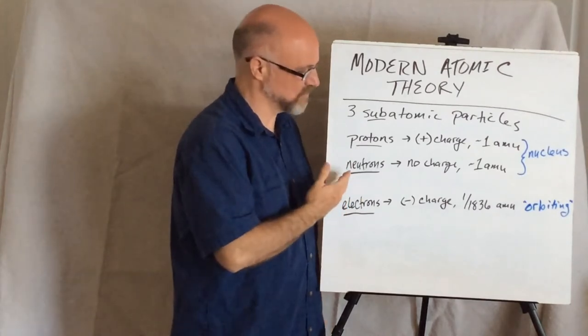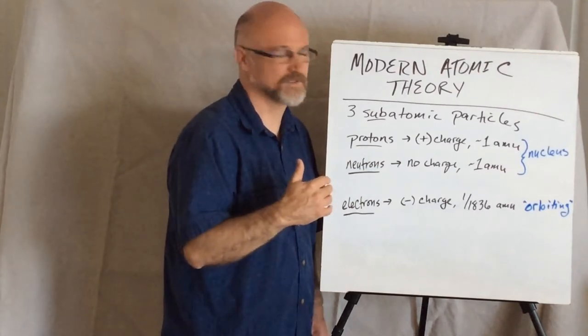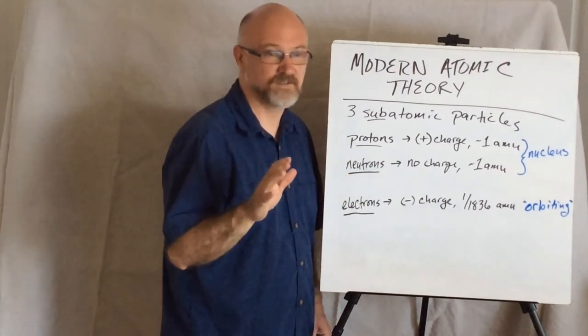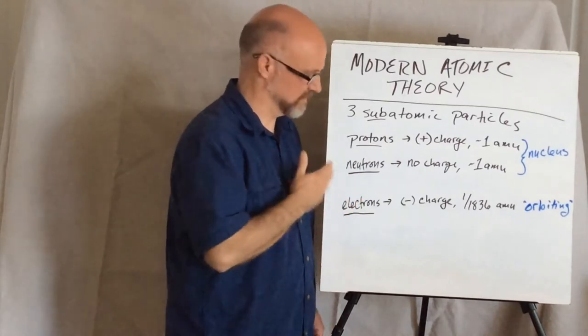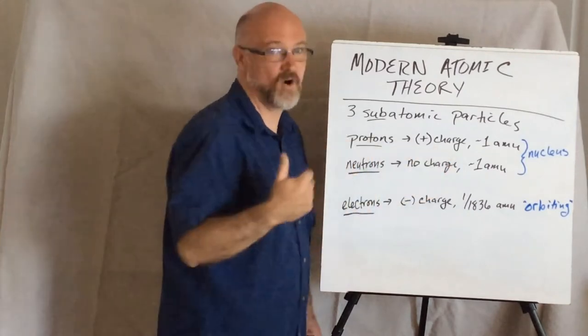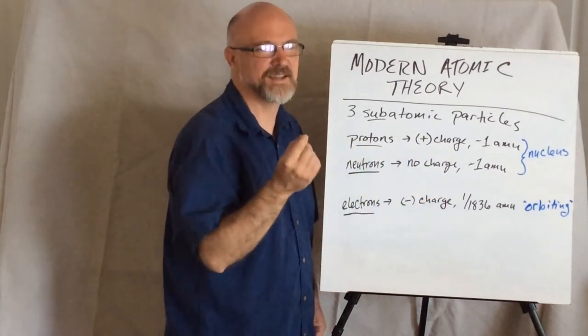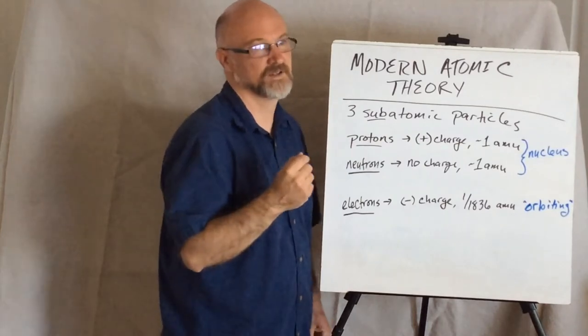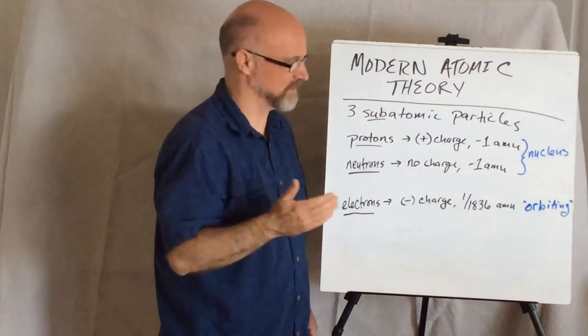Also in the nucleus, you have neutrons. Now, neutrons have no charge or they're neutral. My little pet peeve on the side, there's no such thing as a neutral charge. You either have a charge or you don't. Neutrons have no charge. And they also have mass about equivalent, just a tiny bit heavier, than protons. So, for our purposes, they each have one atomic mass unit worth of mass.